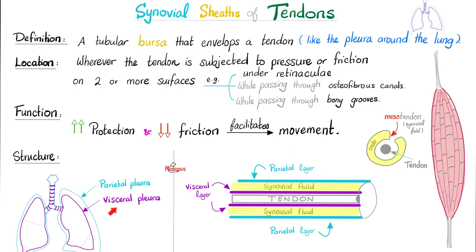Look at this lung. Around the lung there is pleura, with a visceral layer and parietal layer. During embryology, the lung literally pushed through and invaginated the pleura, so the pleura surrounds the lung as visceral pleura and attaches to the rib cage as parietal pleura. By the same token, in the synovial sheath around your tendon, the layer touching the tendon is the visceral layer, and the layer away from the tendon is the parietal layer. Between them is synovial fluid.